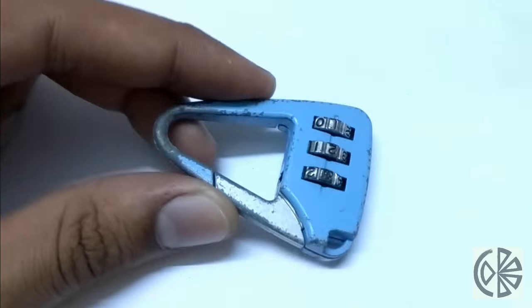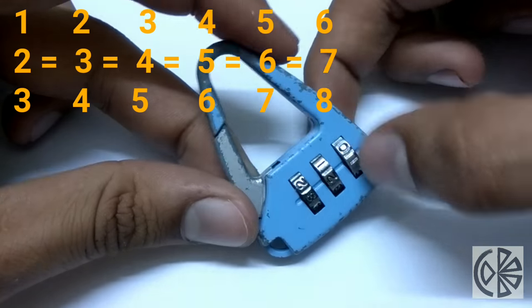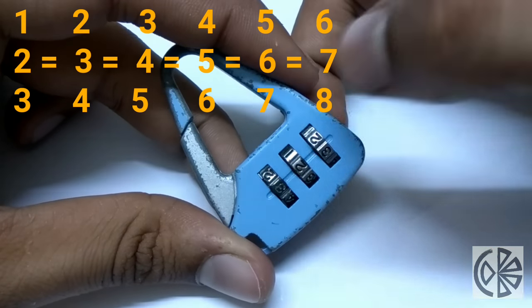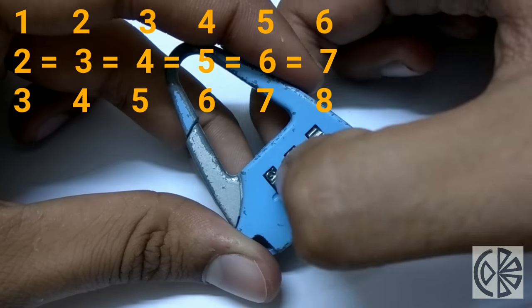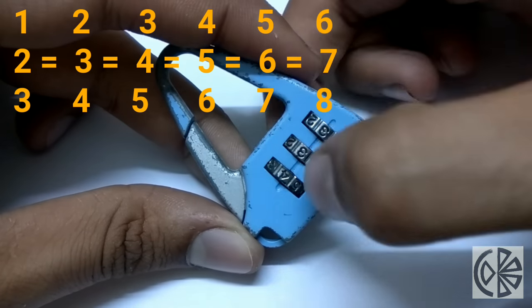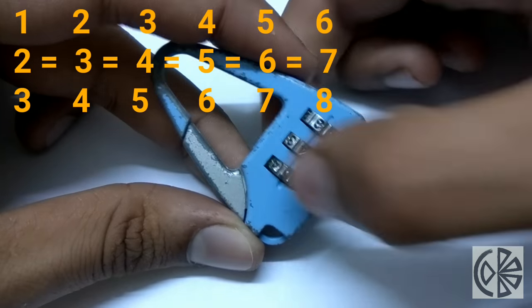After finding the gates to open the lock, move all the dials by one digit and check whether the lock is open or not. Then again move all the dials by one digit and repeat until you open the lock.